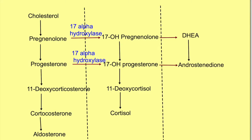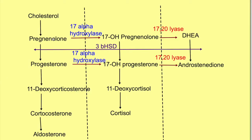This pathway branches further. 17-hydroxy pregnenolone is converted to DHEA (dehydroepiandrosterone), and 17-hydroxy progesterone is converted to androstenedione. DHEA is also converted to androstenedione via a vertical pathway. Horizontally, the enzyme 17-alpha hydroxylase acts in the first step and 17-20 lyase acts in the second step, showing how chemicals travel across the horizontal pathway toward androgen synthesis.